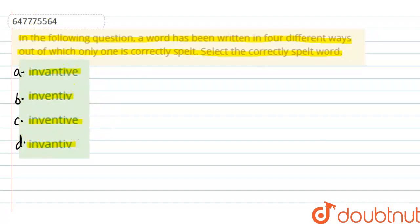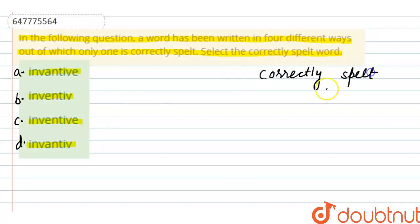Option में हमें 4 ही Option दे रखे हैं Inventive और उसमें से हमें ऐसा Option ढूंढना है जो कि Correctly Spelt हो. यानि कि जो 3 हैं हमारे वो गलत Spelling वाले हैं, वो हमारे लिए गलत आंसर हो जाएंगे और यहां हमें ढूंढना है सही Spelling वाला जो कि हमारे लिए सही Option होगा.